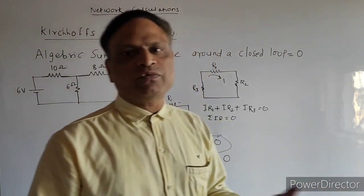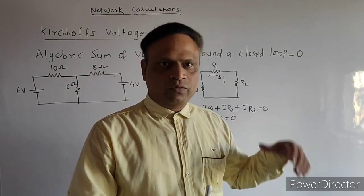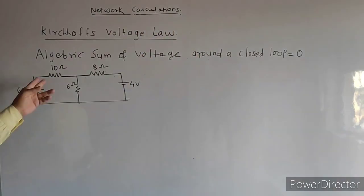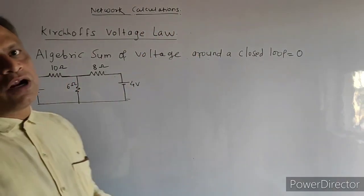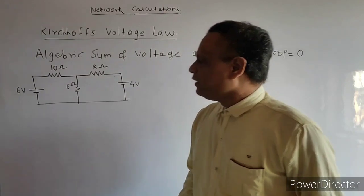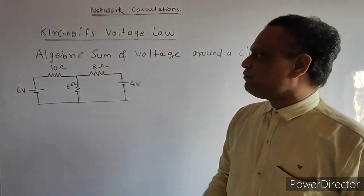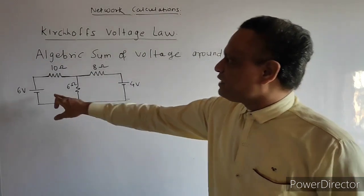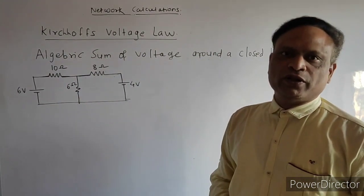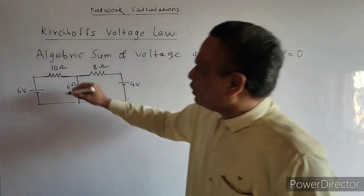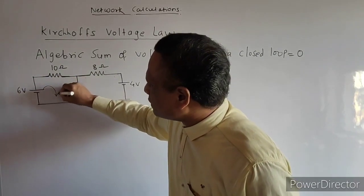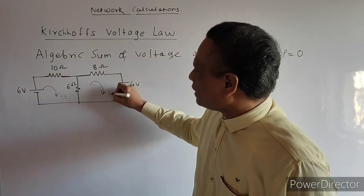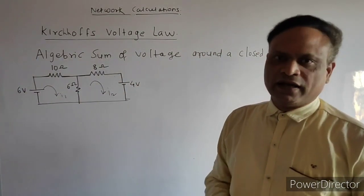We will solve the same problems previously solved by Kirchhoff's current law, now using Kirchhoff's voltage law. This is the problem already solved by KCL with the same resistance and battery source values. There are two loops, so we assume two currents: I1 for the first loop and I2 for the second loop.